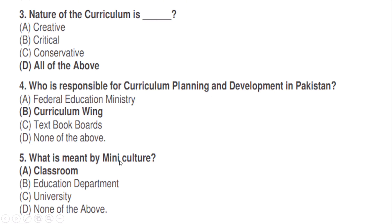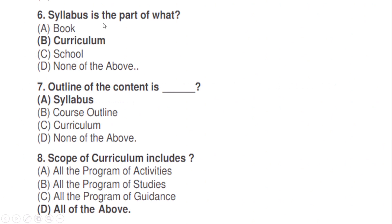What is meant by mini culture? Correct option A — cross classroom. Syllabus is part of what? Correct option B — curriculum. The outline of content is: correct option A — syllabus. The outline is the content of syllabus.